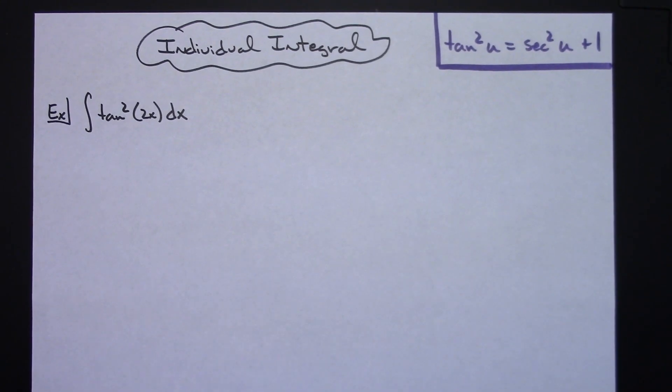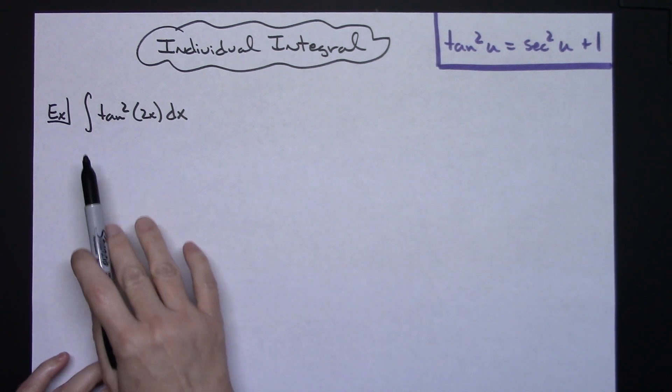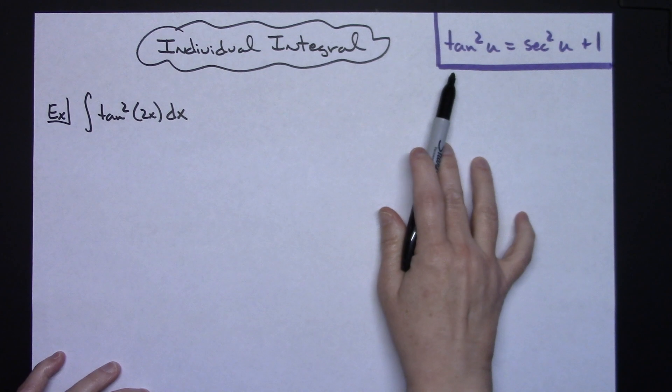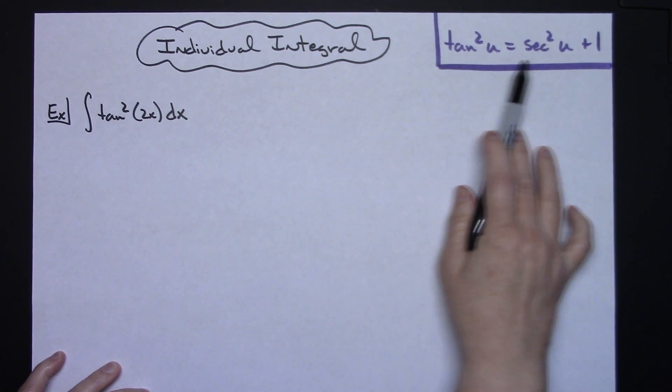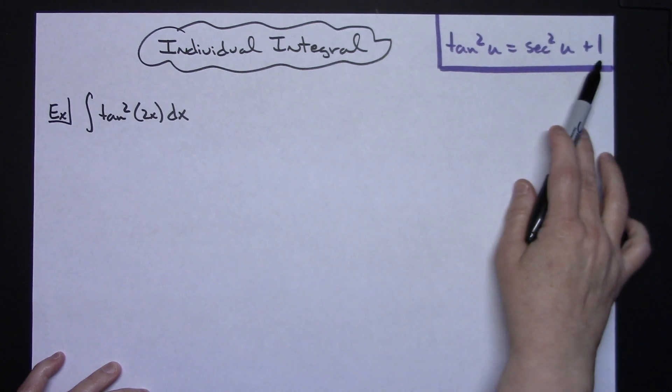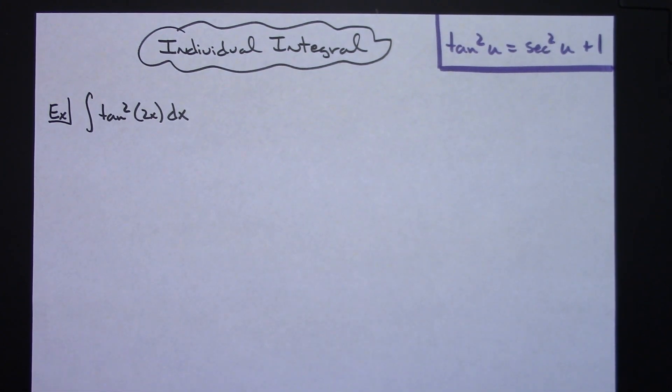In this video, I'm going to do a single individual integral. We're going to take a look at the integral of tangent squared 2x dx. In this problem, we will be using the Pythagorean identity: tangent squared u is equal to secant squared u plus 1.